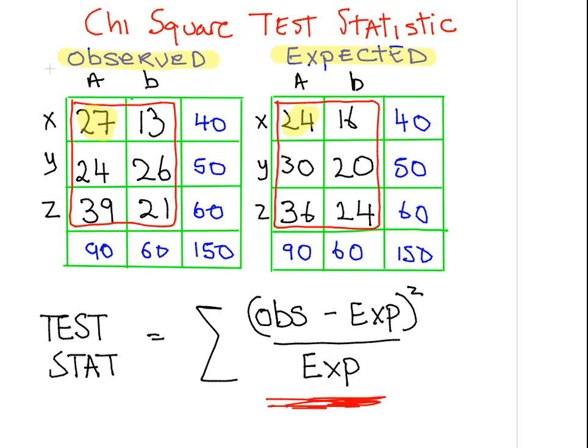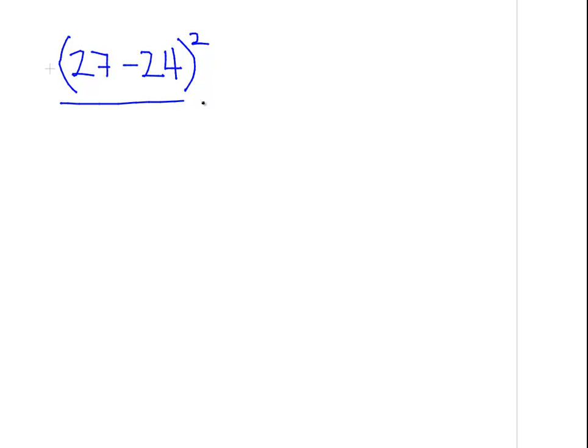27 is the observed value and we're going to subtract 24 and we're going to square that. And the last part is as follows: we divide by the expected value. So we divide by the expected value. Now just be very careful about the brackets - we're only squaring the numerator, what's above the line. So this is 3 squared over 24, which is 9 over 24.